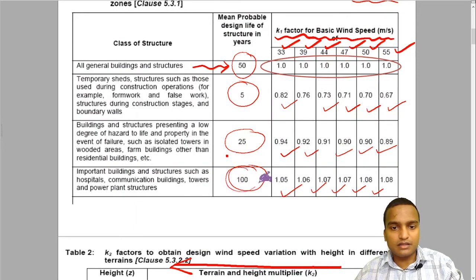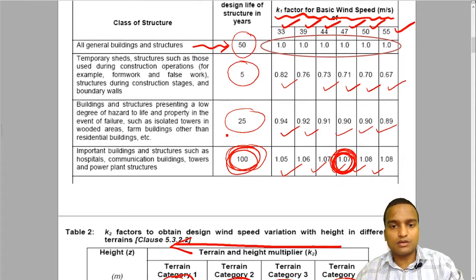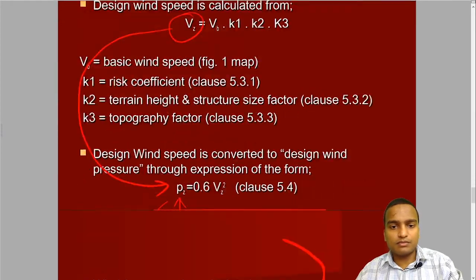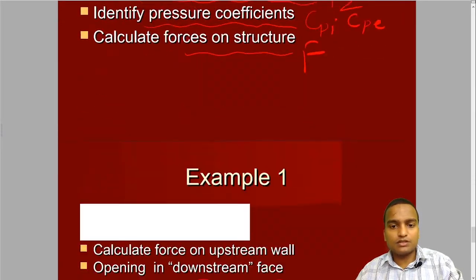If you see for terrain category and design life 100 years, then what do you get for the value of K1? Look at this 100 years and 47. Do you see this? 1.07. So this value of K1 is obtained from the table equal to 1.07.